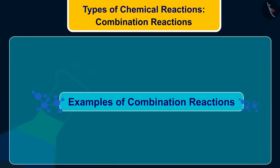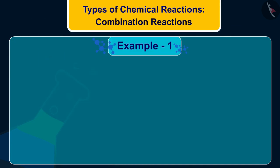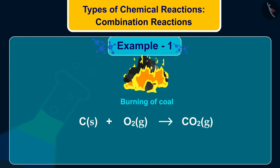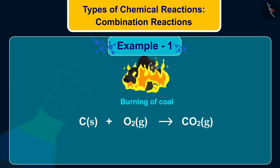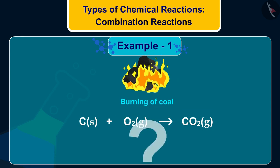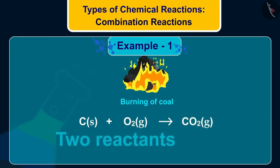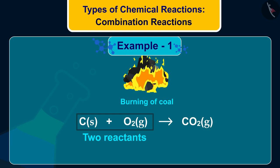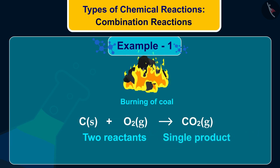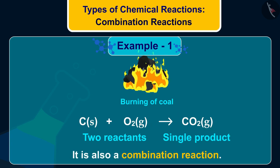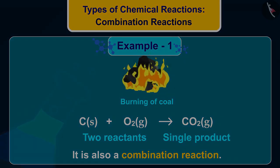Let us discuss a few more examples of combination reactions. The first example is burning coal. In this, coal — which is carbon — reacts with oxygen to form carbon dioxide. This is also a combination reaction because two reactants, carbon and oxygen, combine to form a single product, carbon dioxide.